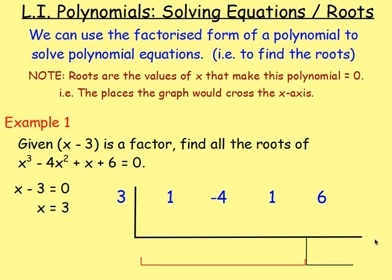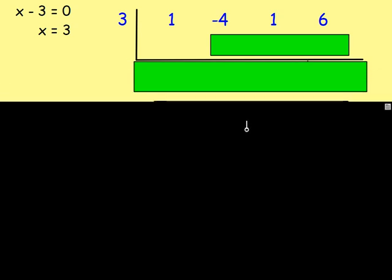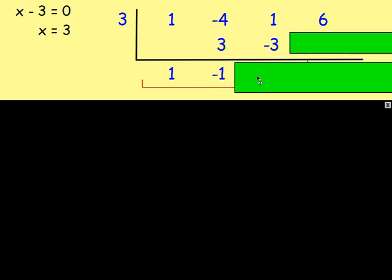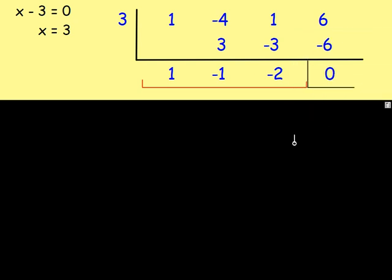So we know if we use our L shape and put 3 to the left of that line and work our way along, we should get zero here, because the remainder will then be zero, meaning that 3 is a root, meaning x minus 3 is a factor. Set up the L shape, take the coefficients, and we've got 1, negative 4, 1, and 6. We've got 3 here because x minus 3 equals zero, so x is 3. Add the columns, multiply across by the 3. 1 times 3 is 3. Add, you get negative 1, multiply by 3. Add again, multiply, and finally add. And we get zero, which is what we expect, because x minus 3 is a factor.